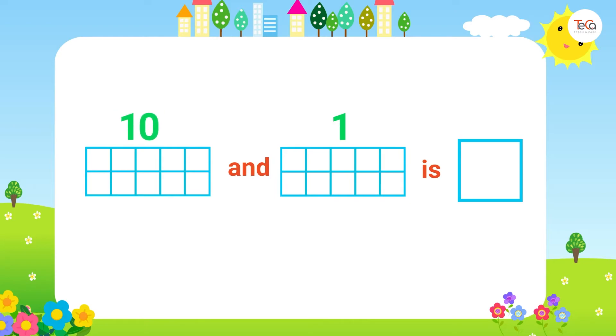Let's do the first one: 10 and 1 is 11. To show this number sentence, draw 10 dots on this 10 frame, then one more dot here.